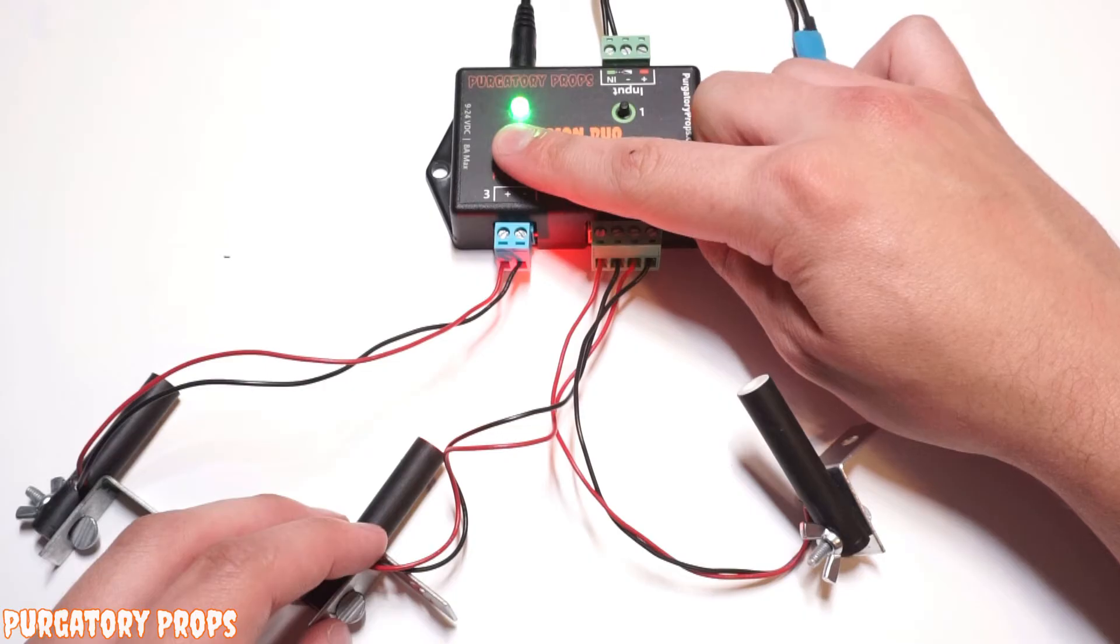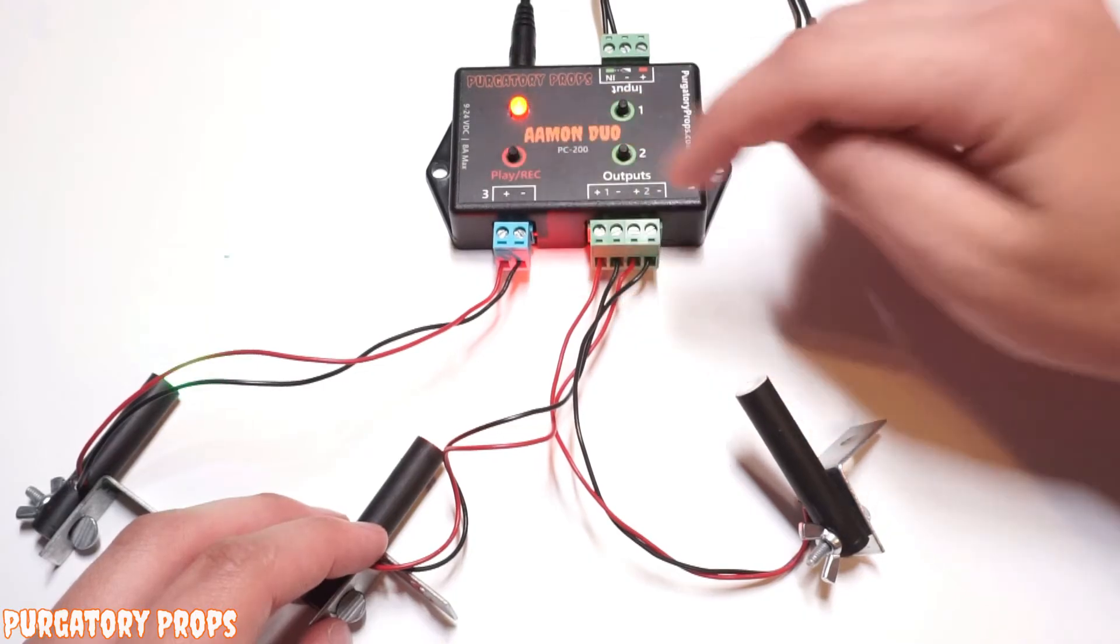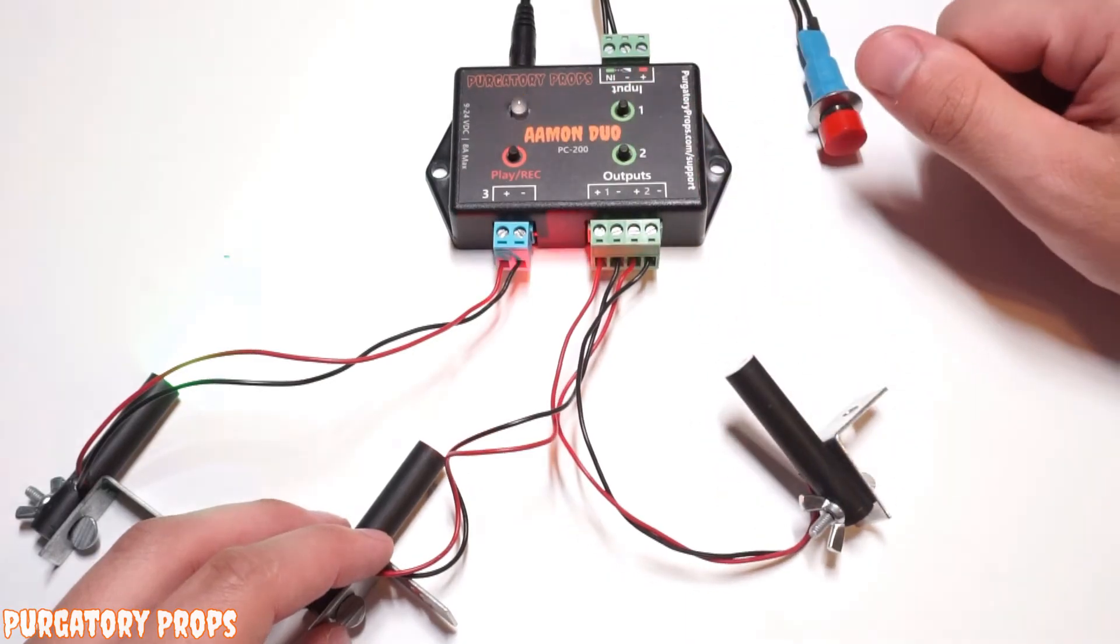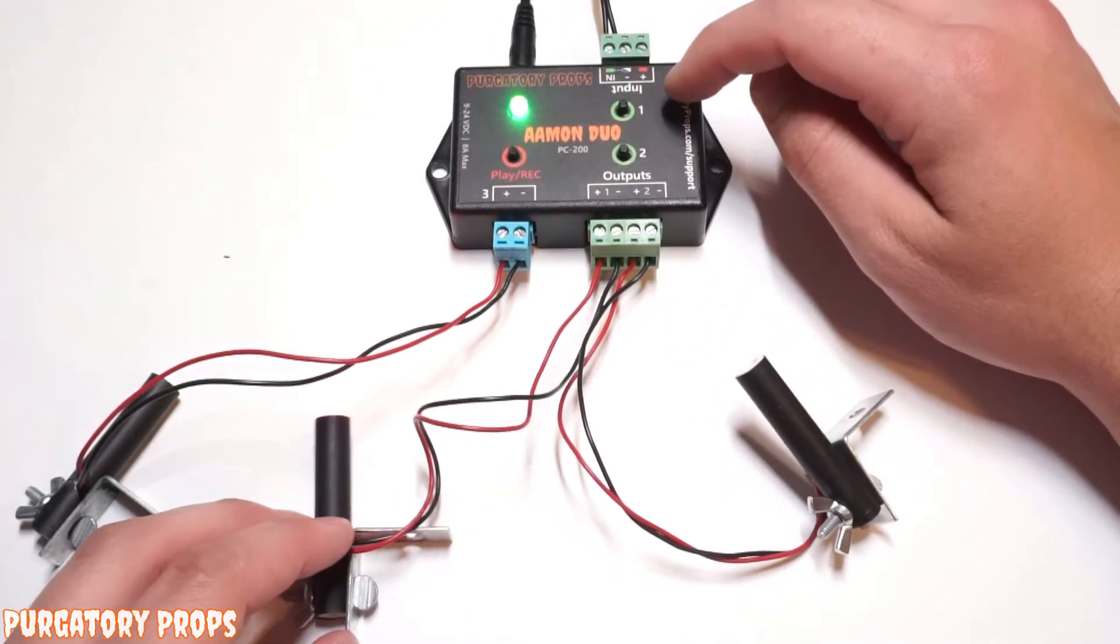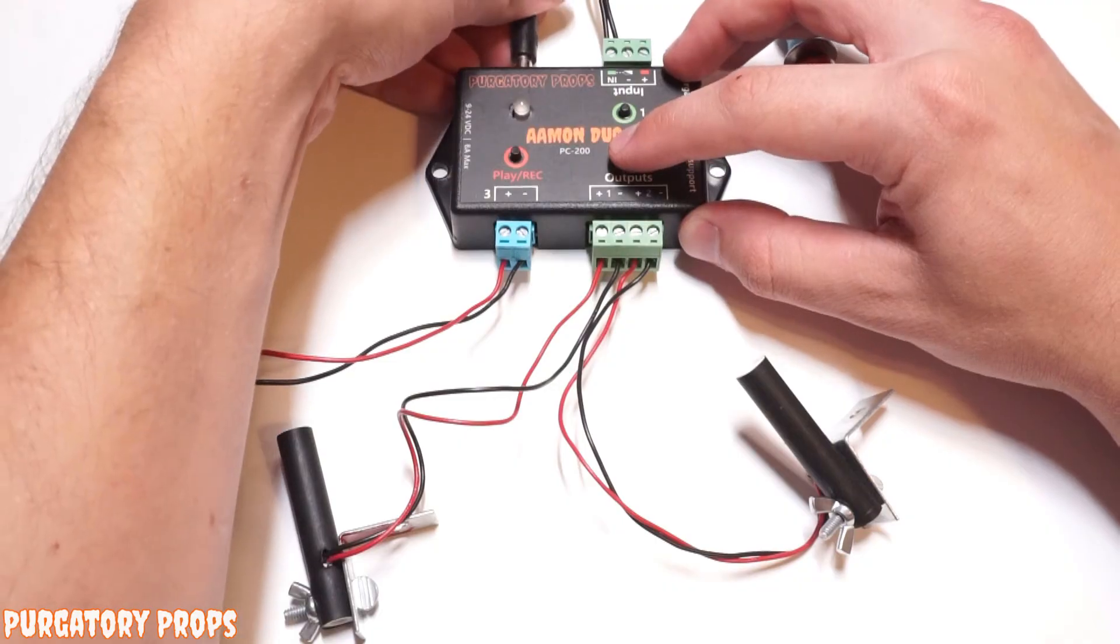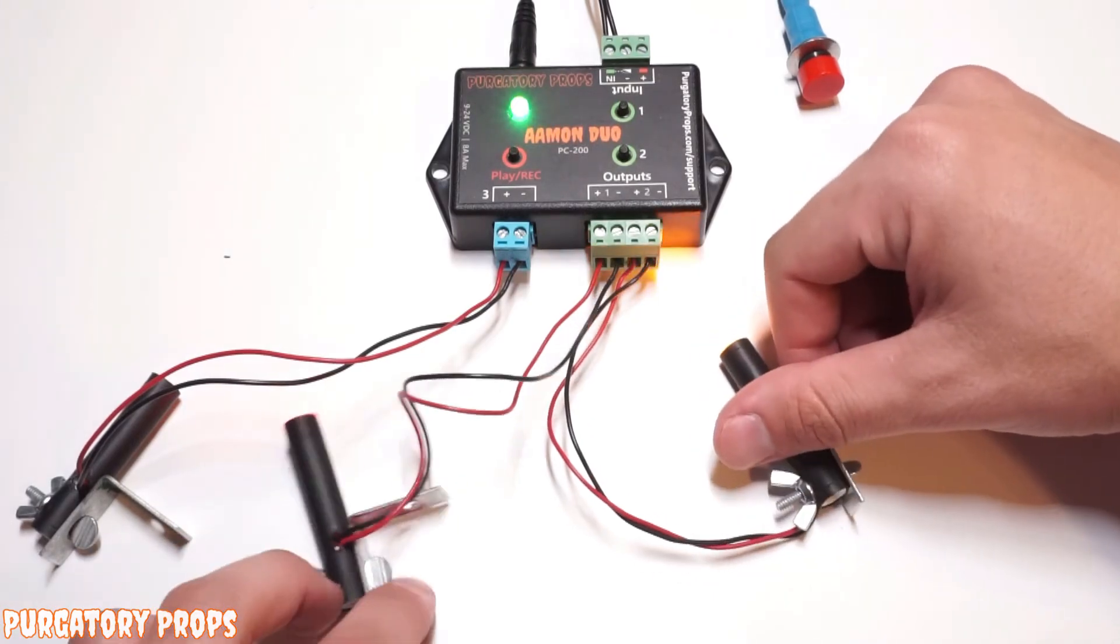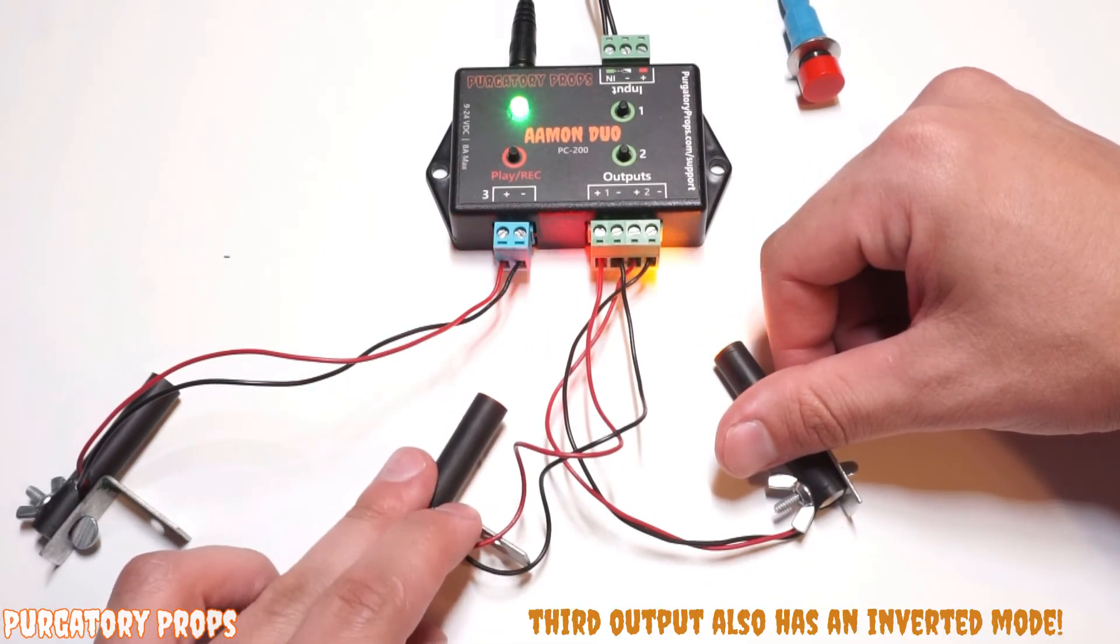So when we record, you'll see output one stays on, and then when we push the button, it turns off. You can do this with output two by holding button two, releasing when it turns red. Now output two and output one are both in inverted mode.